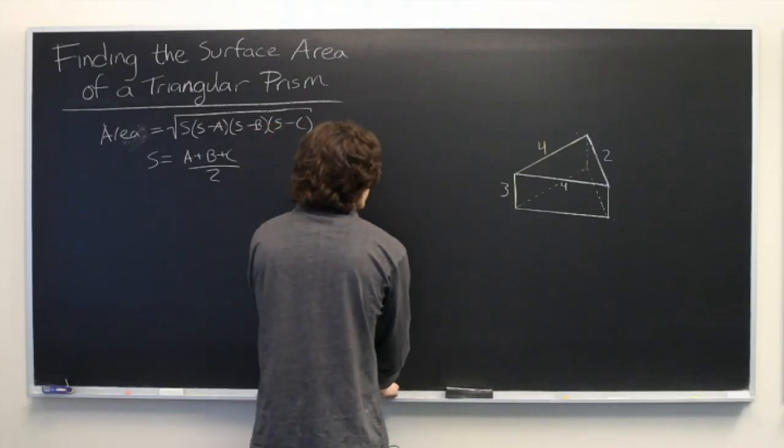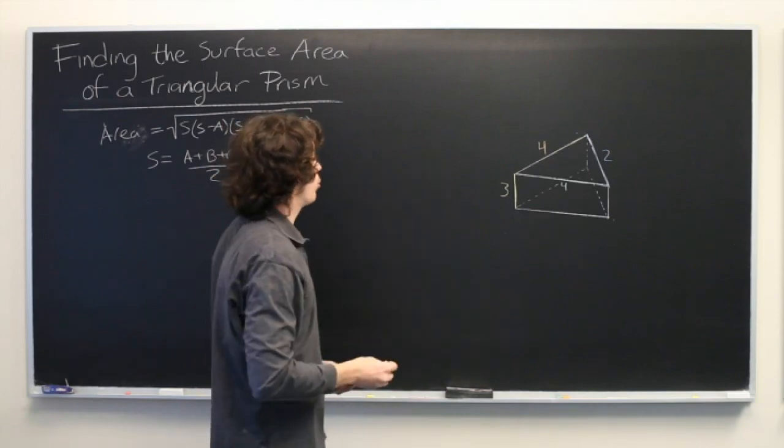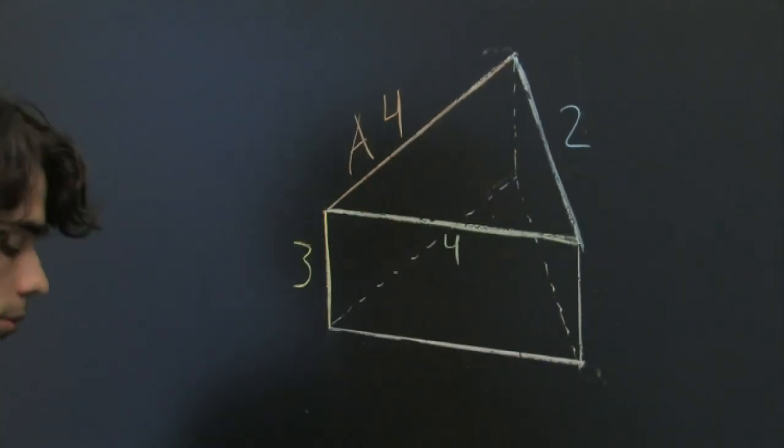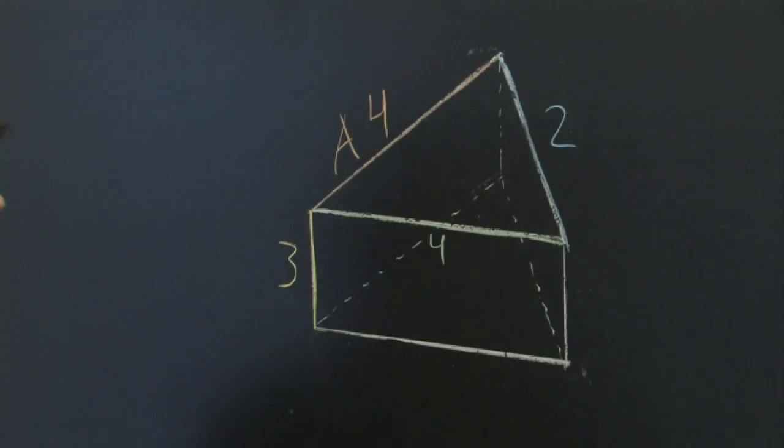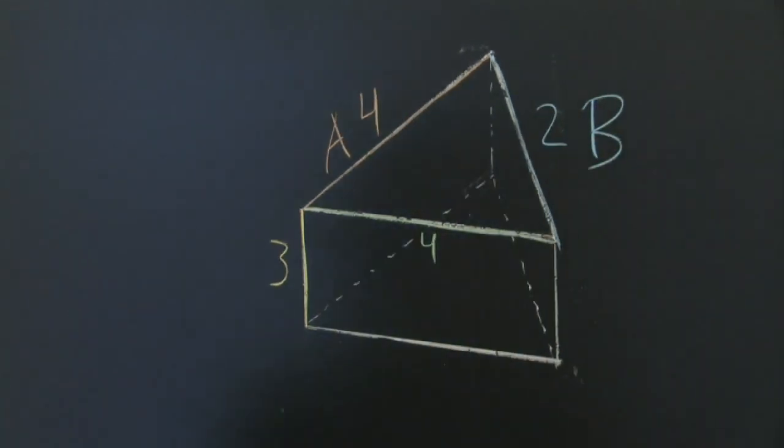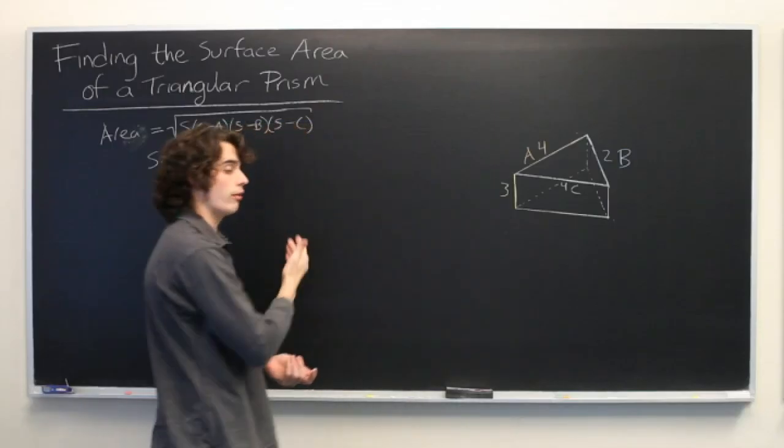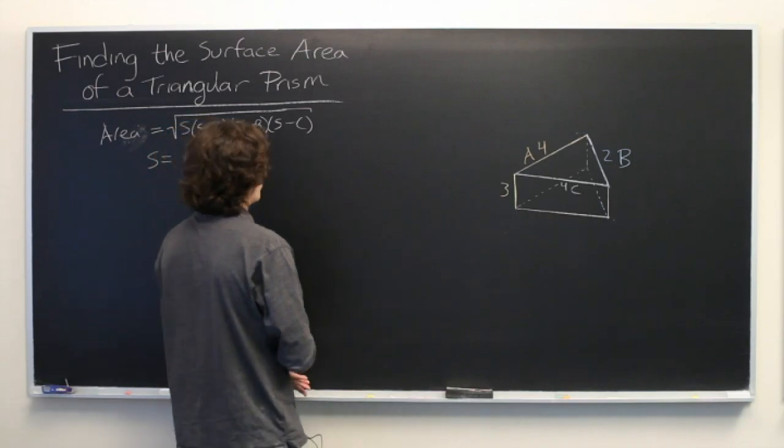So let's go ahead and give these some labels. It doesn't matter which side you label what as long as you are consistent throughout the problem. So we'll call the orange side A, we'll call the blue side B, and we'll call the green side C. And the yellow edge is not relevant for this computation, so we'll leave that out for now.